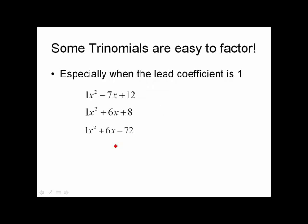As you've experienced already, some trinomials are pretty easy to factor, especially when the lead coefficient is 1. Basically, what you're looking for, for example in the first one, is two numbers that multiply together to give you 12 and add together to give you negative 7. That's when you combine the outsides and the insides in the FOIL process.